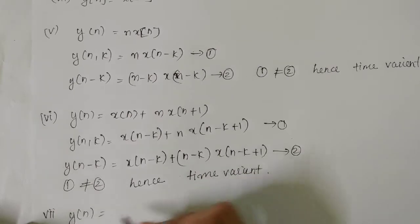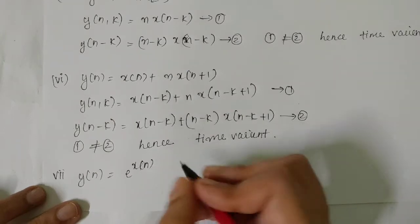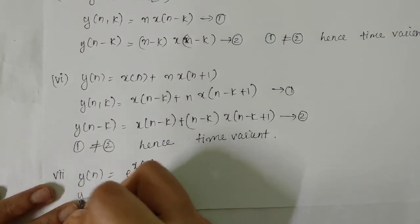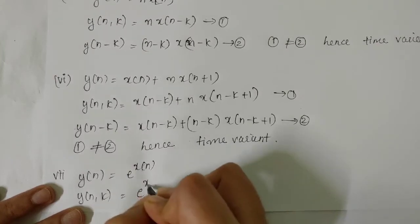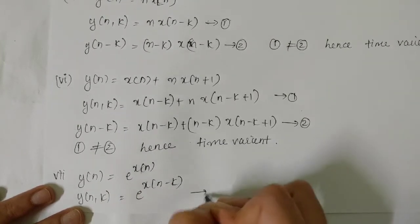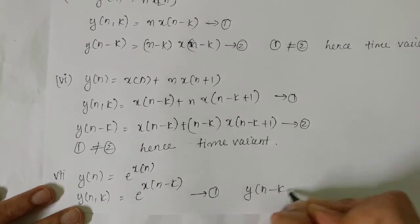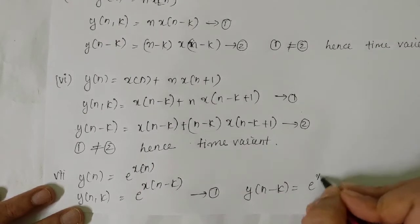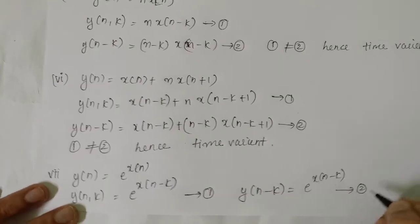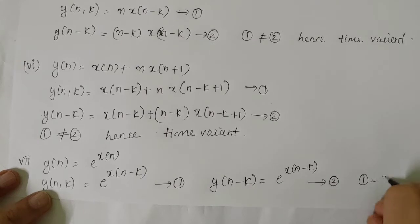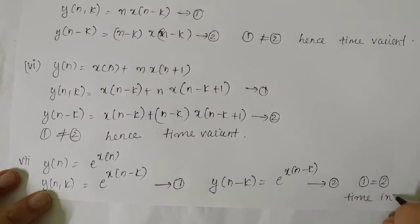The seventh question: y[n] = e^(x[n]). So y[n,k] = e^(x[n−k]), which is the first equation. And y[n−k] = e^(x[n−k]), which is the second equation. Since one equals two, hence the system is time invariant.